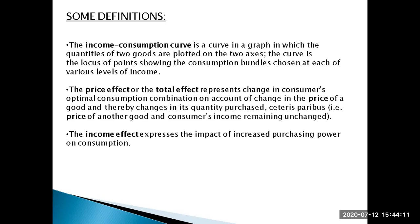When the price of a particular good falls, you have more disposable income — more purchasing power — because you are not spending as much on that good. You can now spend more money on other goods or on that good itself. That increase in purchasing power may affect how you allocate the rest of your money. The portion of the preference change caused by this alteration in purchasing power is called the income effect, because it affects your relative income.